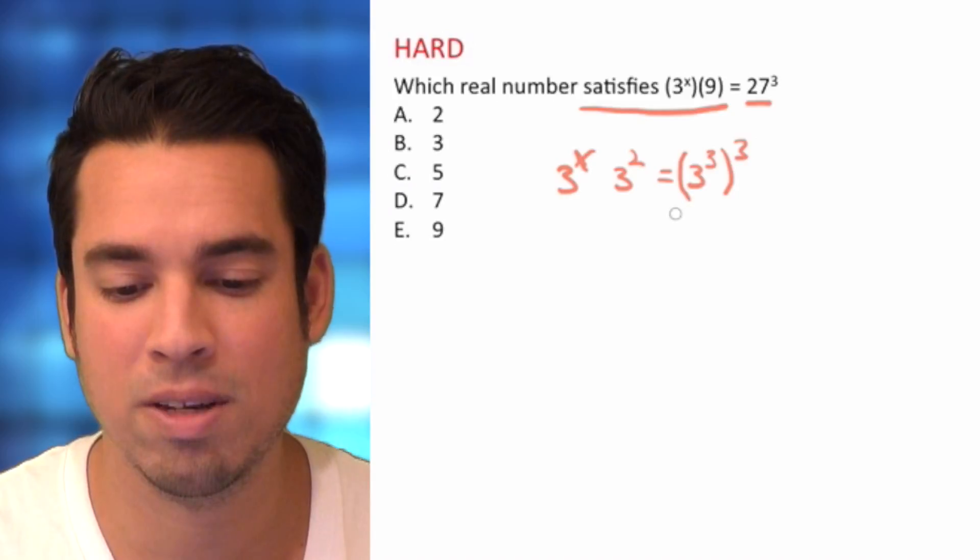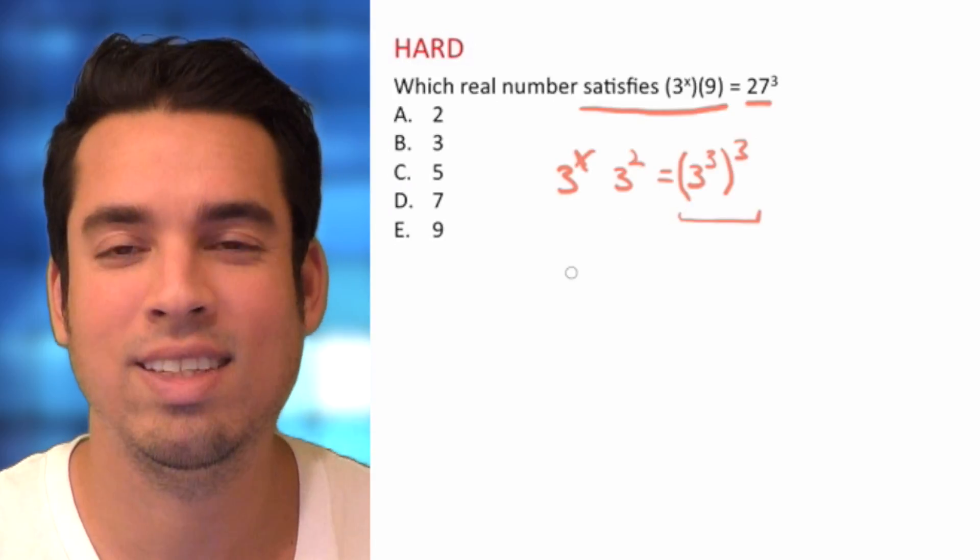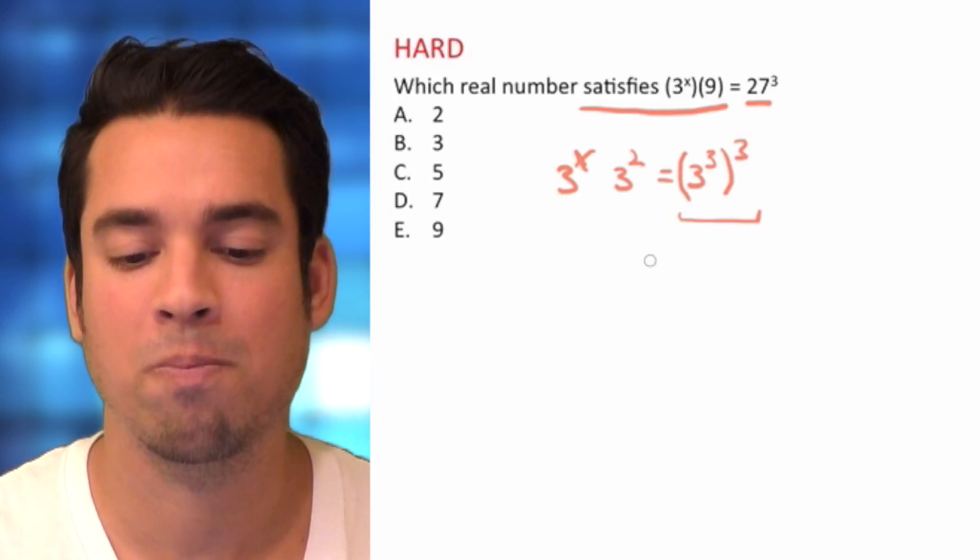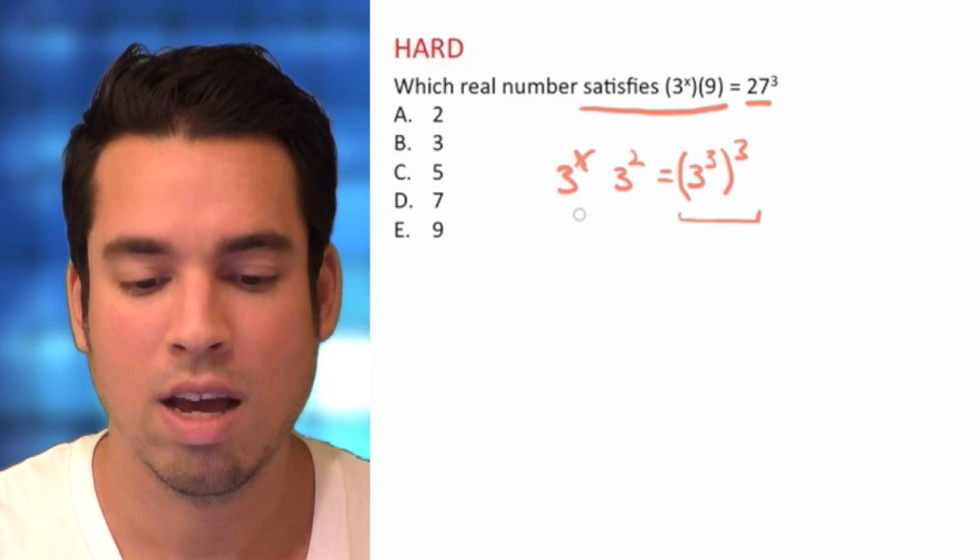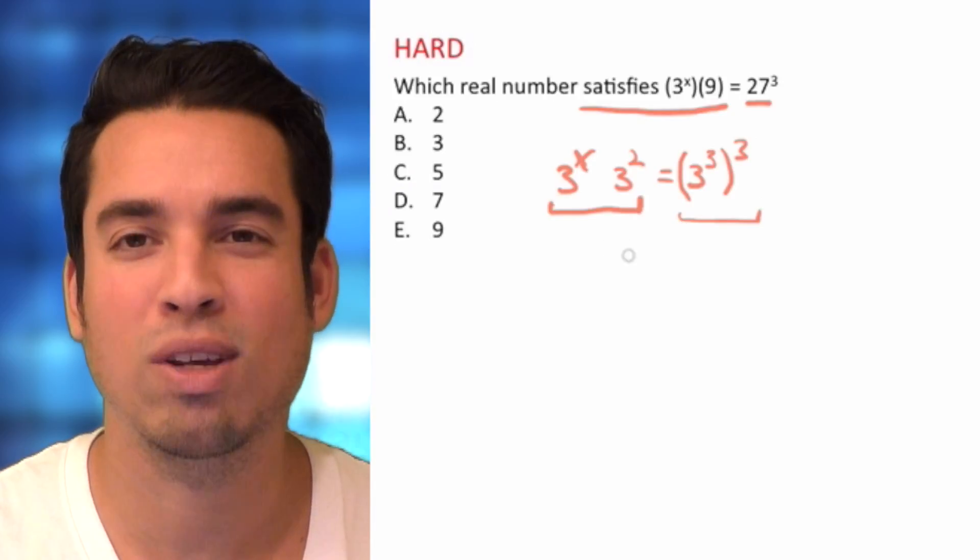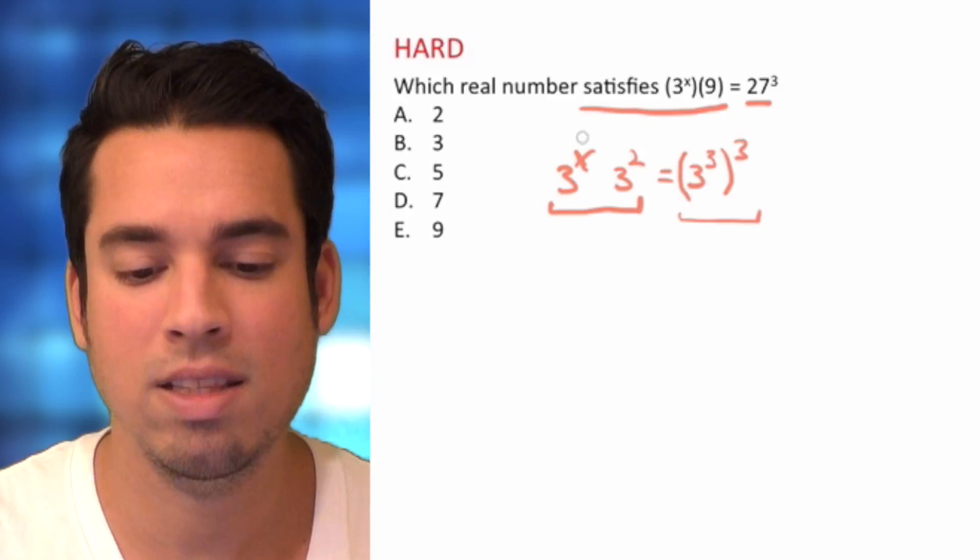This is the exact same on this side as 27 to the third power. Okay, why is this helpful? Now we can combine these, right? We have the same base, so guess what we can do? We can combine these.